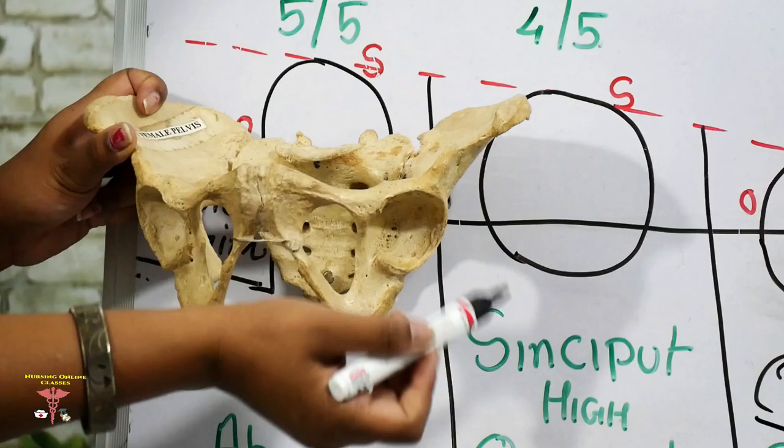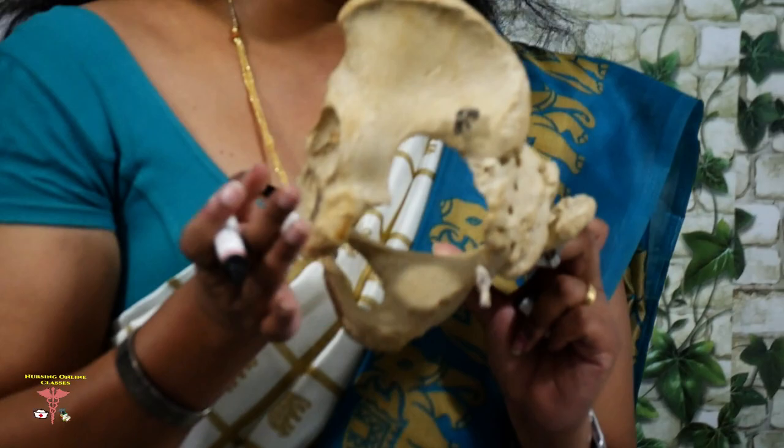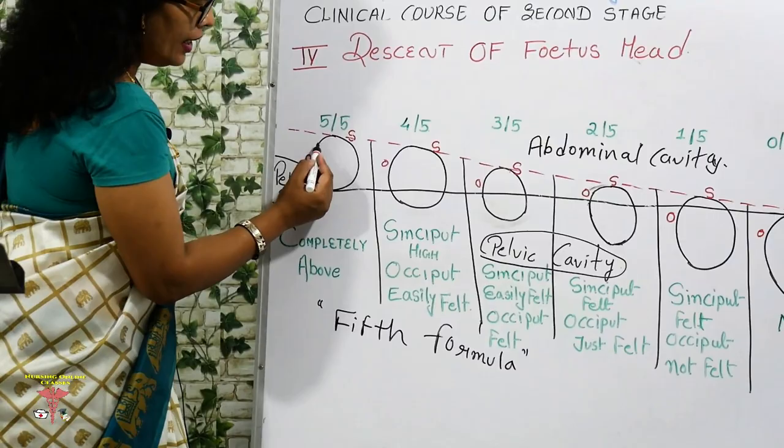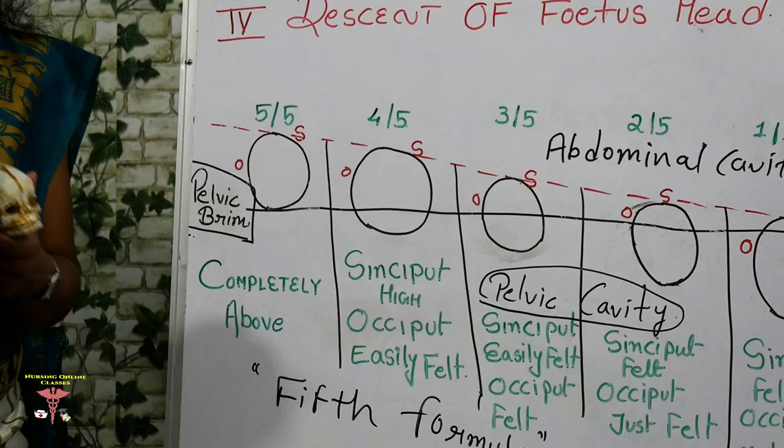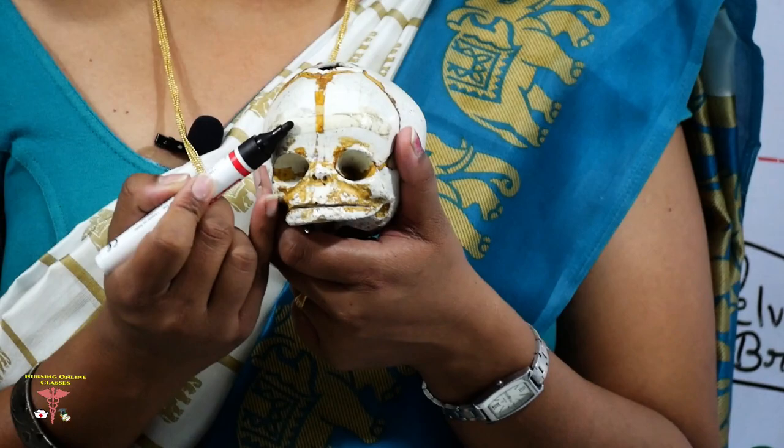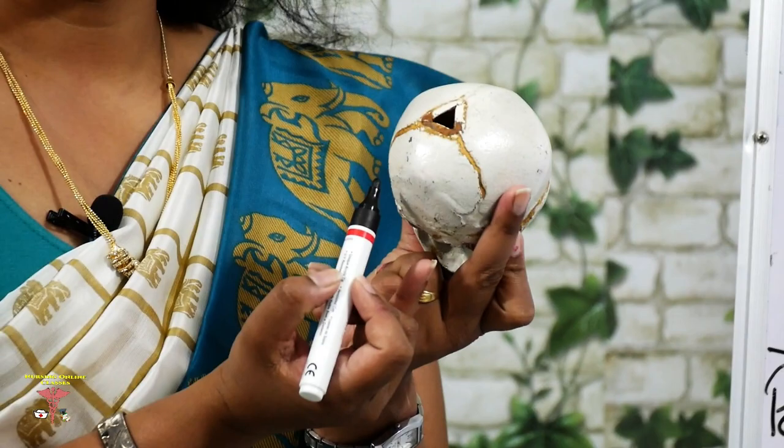This line is the pelvic brim, where the head has to descend from above. Along the pelvic brim you have the ischial notch, the process, and the ischial spine. If we look at the fetal head on the diagram, the sinciput is the anterior portion of the fetal skull and the occiput is the posterior portion.